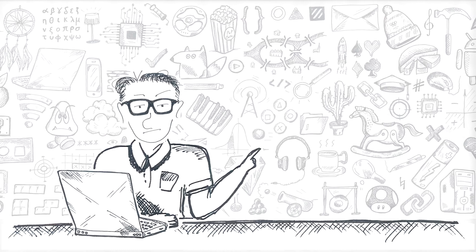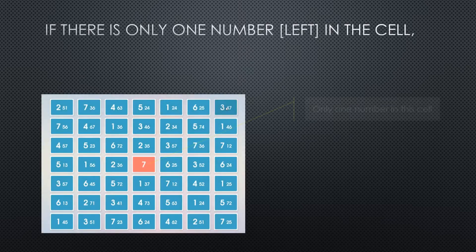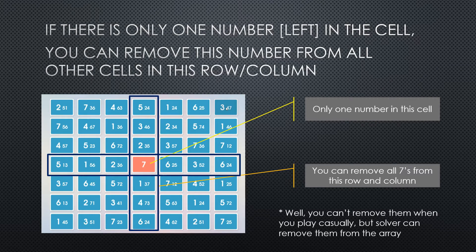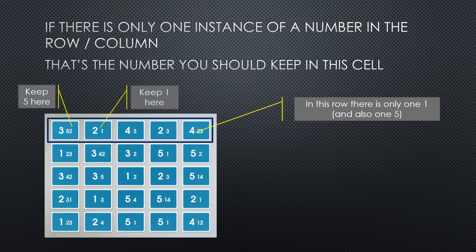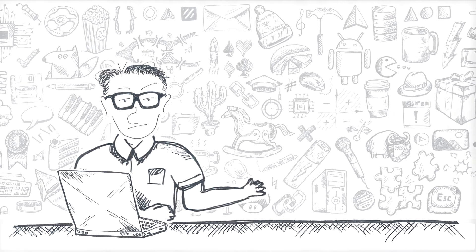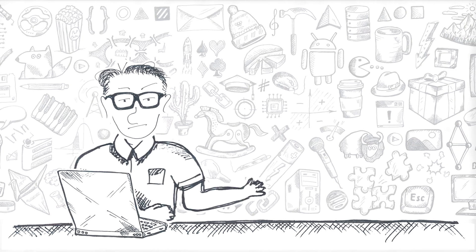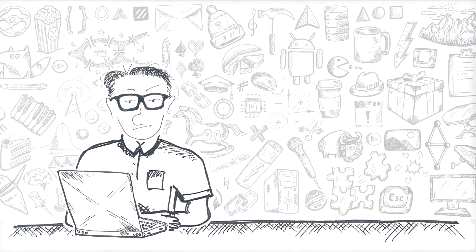The basic logic is quite simple — you'd grasp it after playing through a couple of levels. First, if there is only one number in a cell, you can go ahead and delete this number from all cells in this row and column. Second, if in the whole row or column there is only one instance of a certain number, this number is the one that should be left in that cell. Apply these two rules to all the cells and all the rows repeatedly, and sooner or later you will be left with the array where you have exactly one number per cell — the solution.